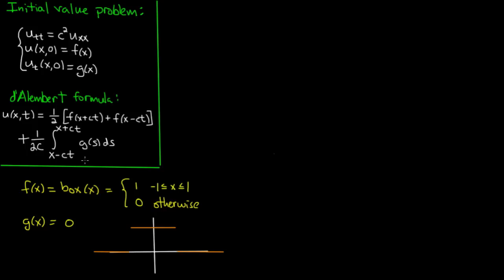So what does d'Alembert's formula say will happen? Well the g part is 0, so we don't have to worry about this integral. So we'll just have a sum of two f's, f is this box. So we'll have u equals 1 half box of... let's take c equals 1 just to be simple, box of x plus t plus 1 half box of x minus t.